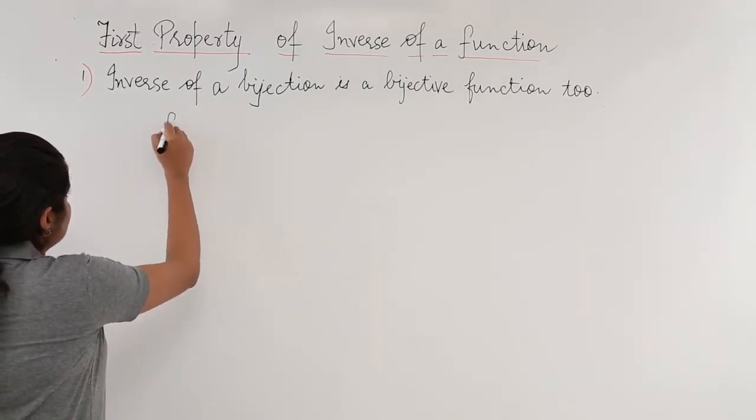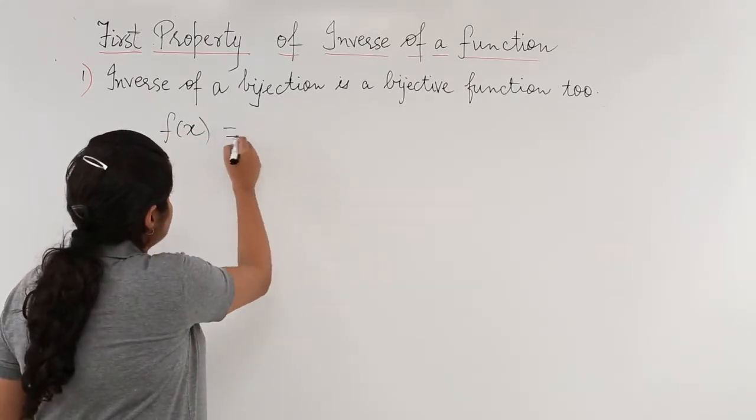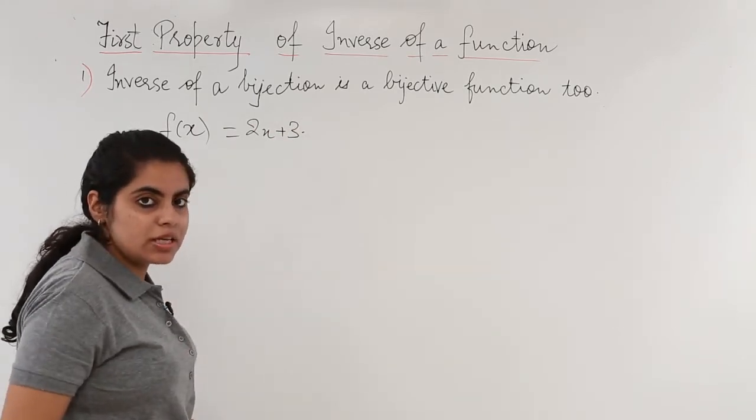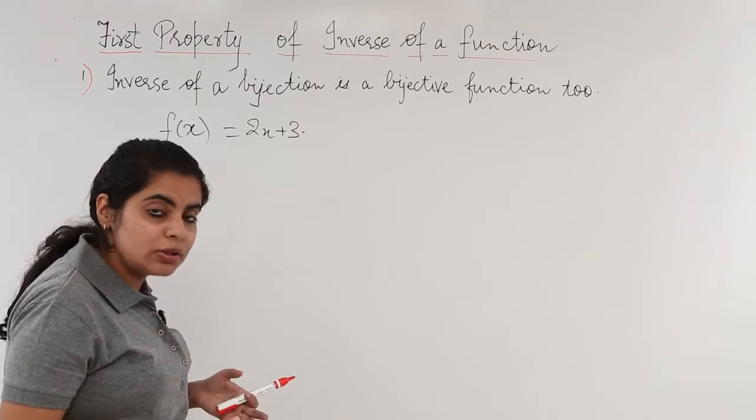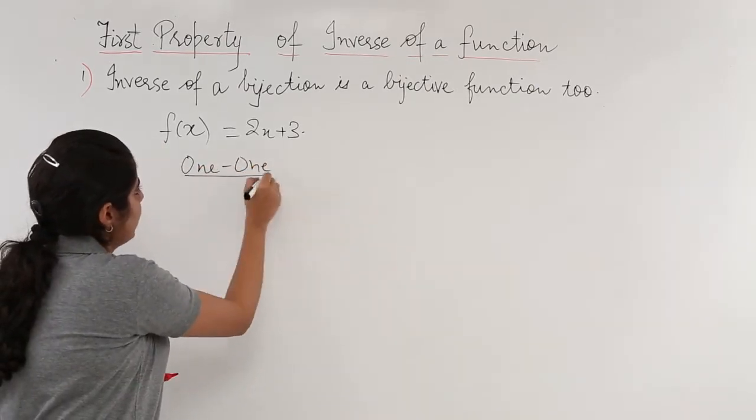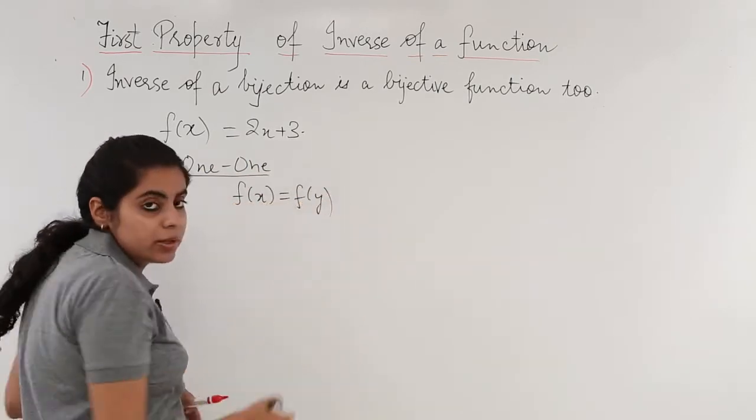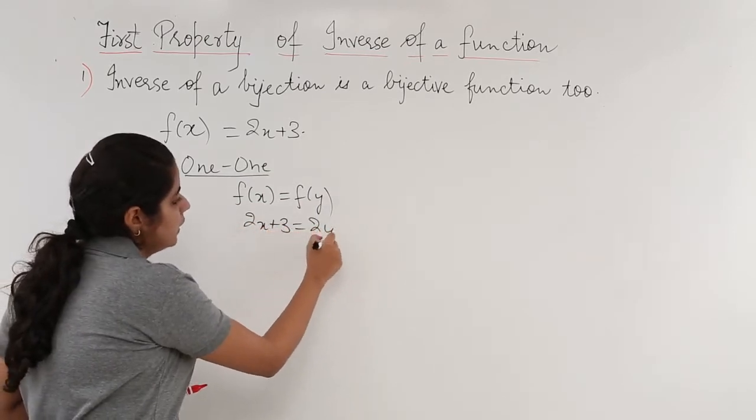I have been given a function f(x) which is equal to 2x plus 3. Now this function f(x) I know is both one-one and onto. How do I know this? I know this simply by checking it for one-one first quickly. That means let f(x) is equal to f(y).